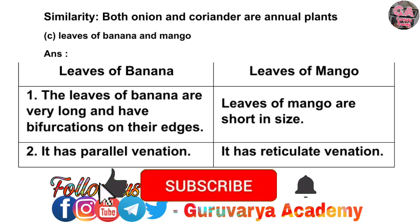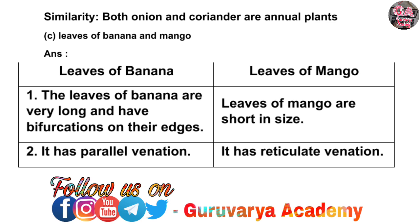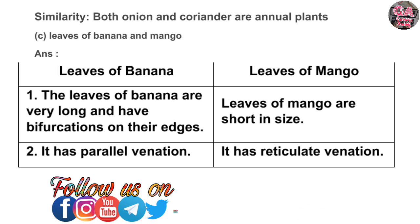C. Leaves of Banana and Mango — make two columns. The leaves of banana are very long and have bifurcation on their edges. Leaves of mango are short in size. Banana leaves have parallel venation; mango leaves have reticulate venation. Similarity: both banana and mango are perennial plants.